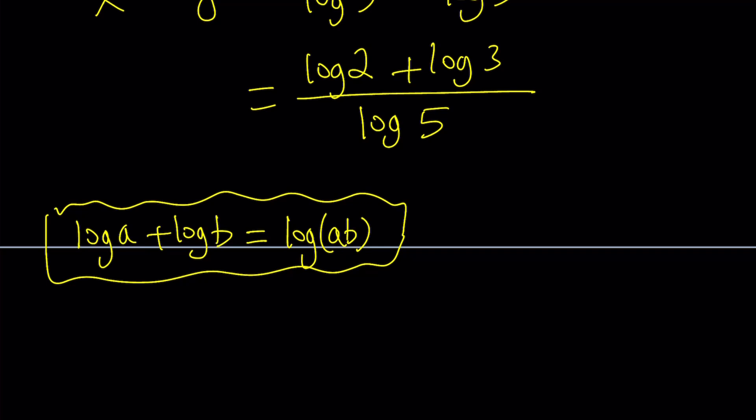So if you have a sum of two logs you can turn it into a single log which is called condensing. And if you do the opposite it's called expanding. So this will become log(2 × 3)/log 5. And that can be written as log 6/log 5. You can leave it at that if you want.